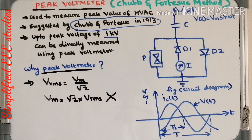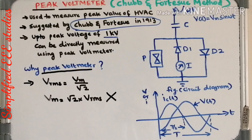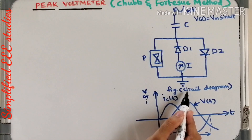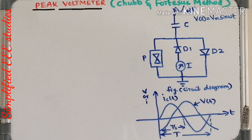For such a situation, you need a separate device which is used to measure the peak value of high voltage AC. That is the importance of the peak voltmeter and why it is needed. Now let us discuss the constructional details of the peak voltmeter. First of all, you have to observe the schematic diagram corresponding to the peak voltmeter.